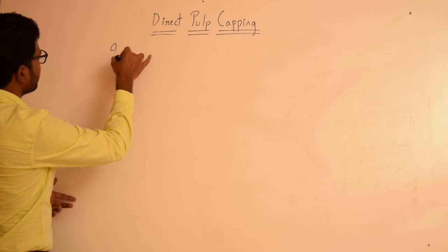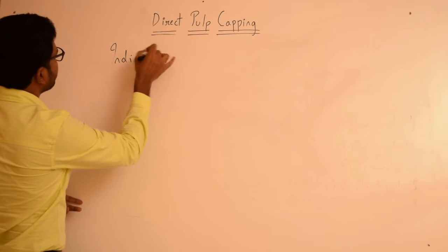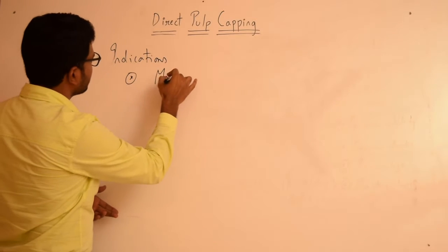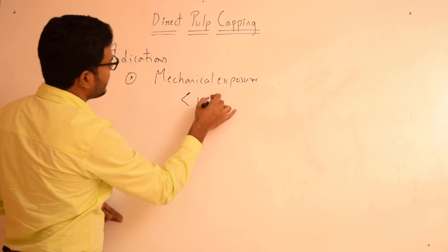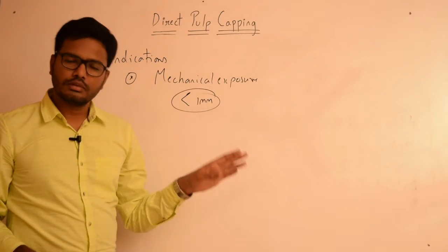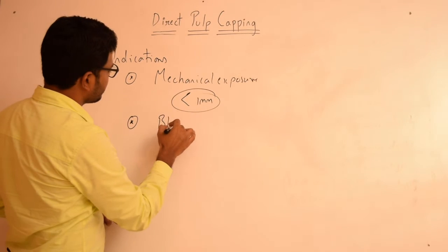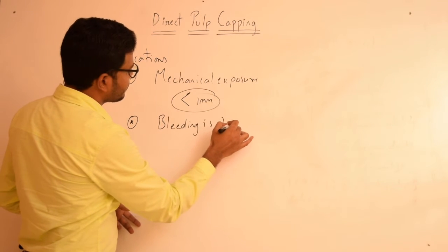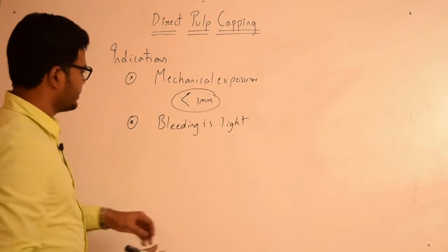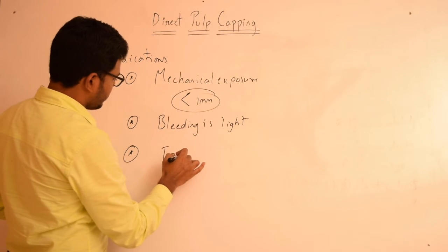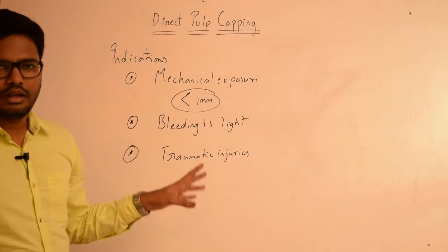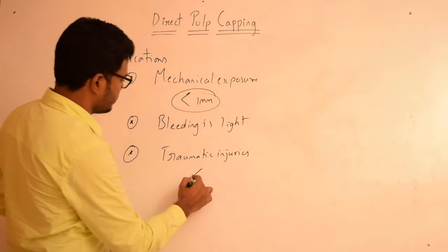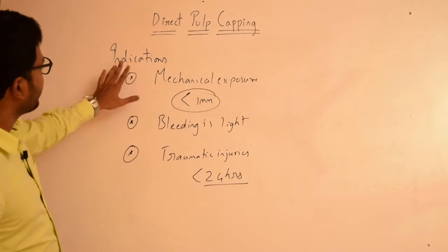The first indication for direct pulp capping is when there is mechanical exposure of pulp which is less than 1 mm in diameter. Also, when the bleeding is light in color and readily controllable, only then we proceed with direct pulp capping. In cases of traumatic injuries to teeth, the area has to be maintained dry and clean and reported to the dentist within 24 hours.